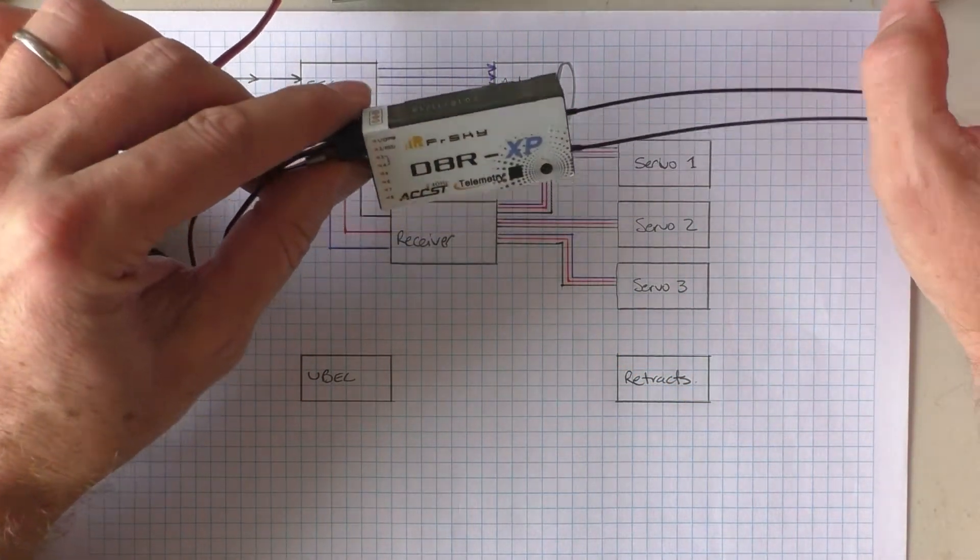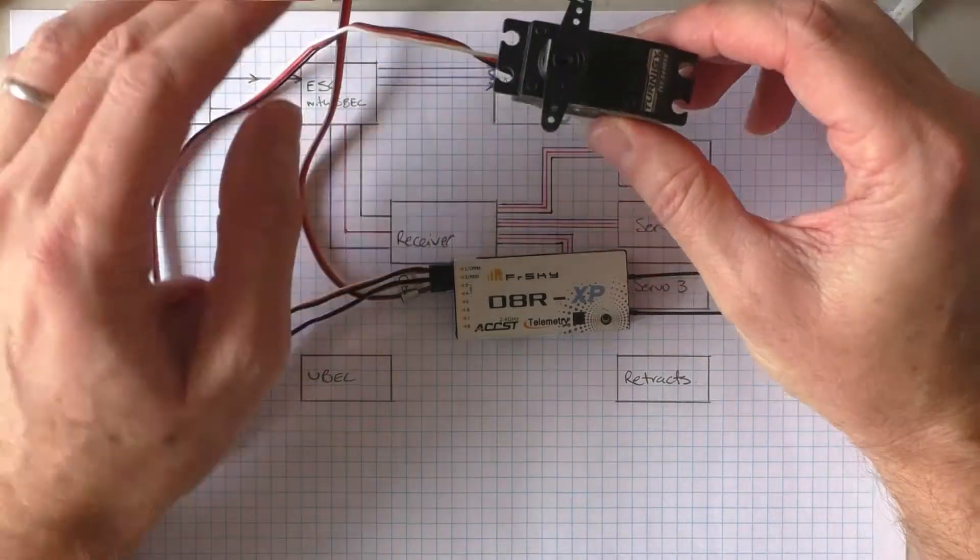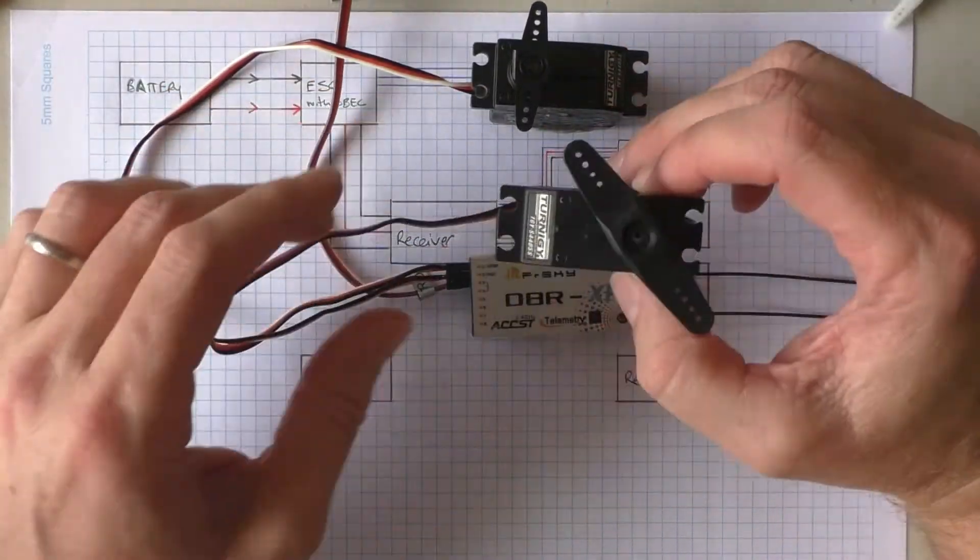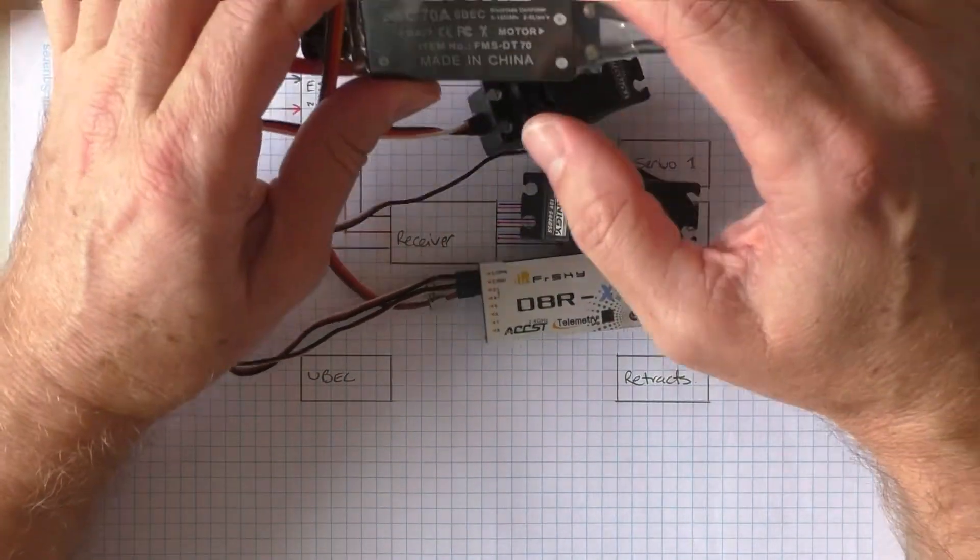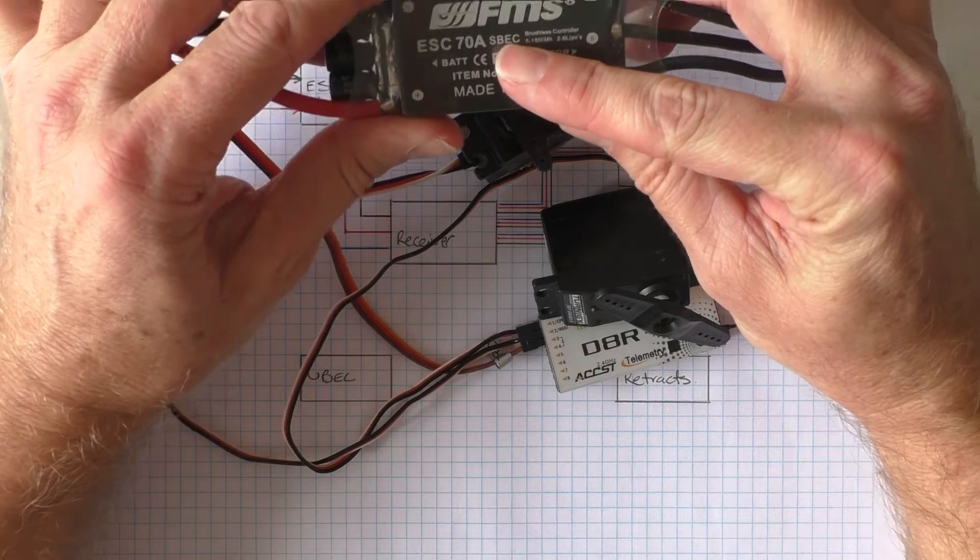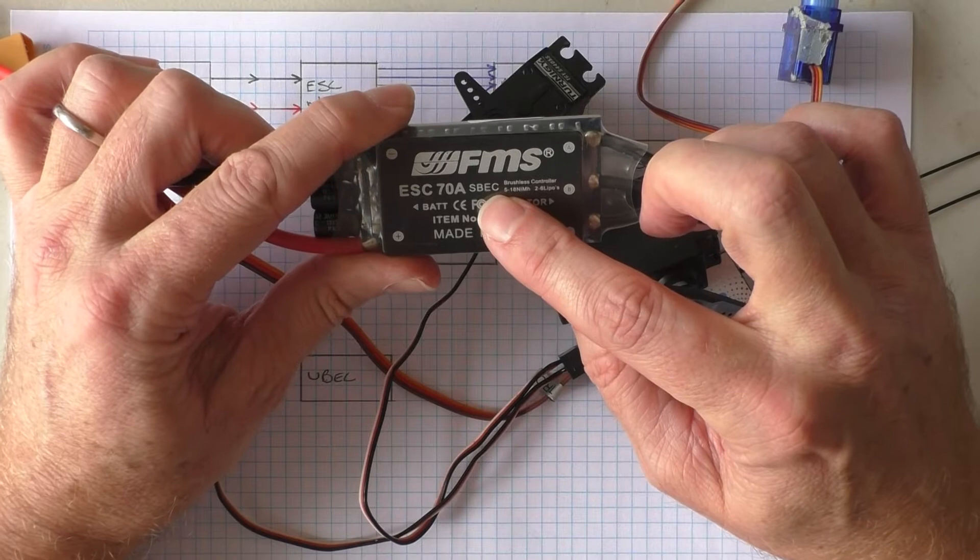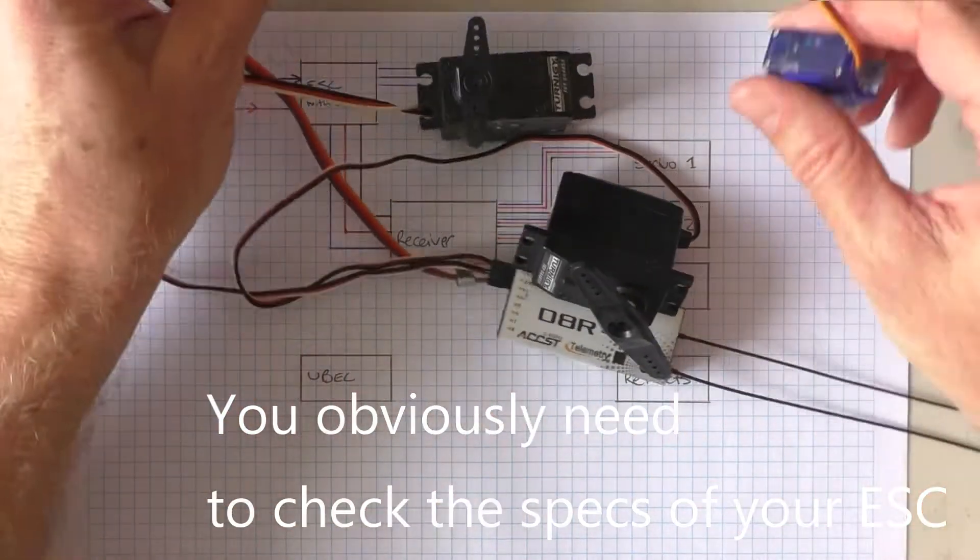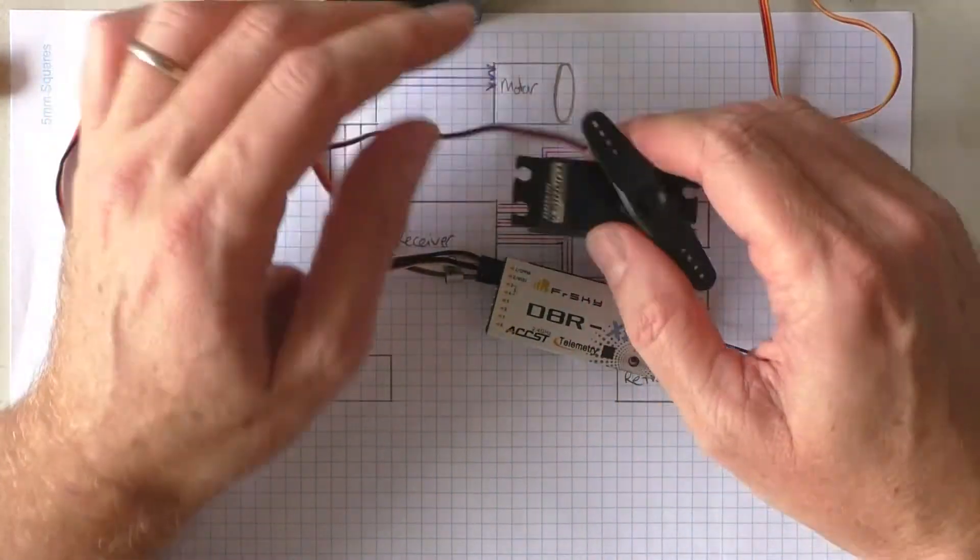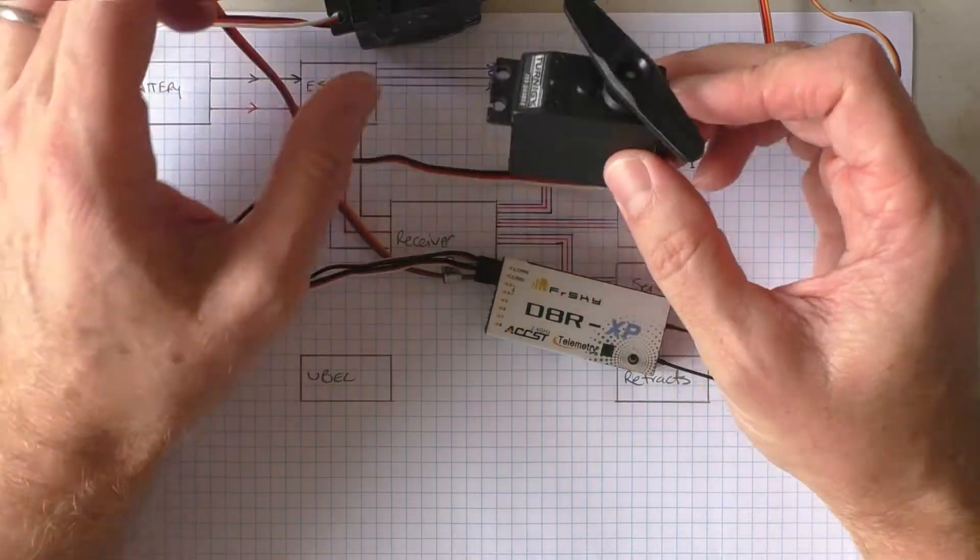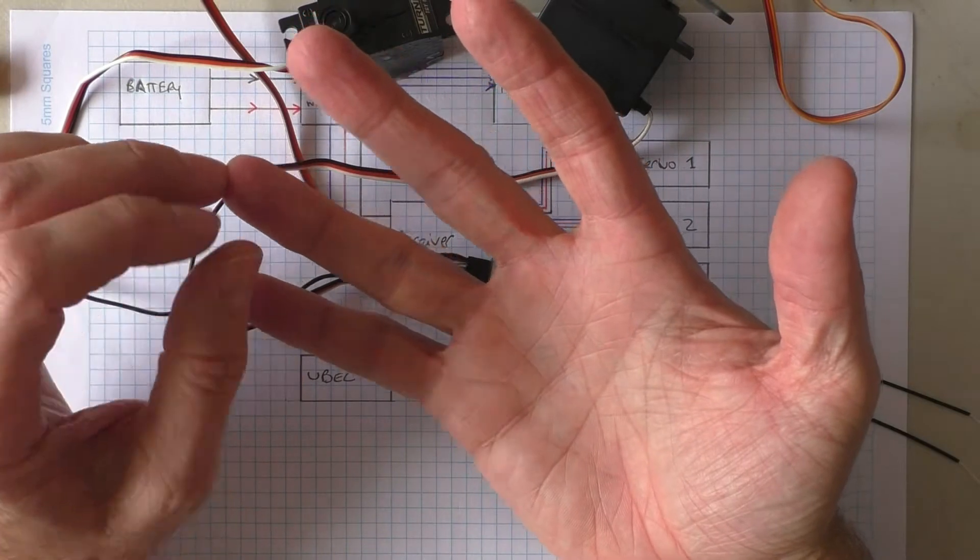Once you start getting into larger planes which use larger servos, you may want to look at installing a UBEC. The reason being is that the power that is put out by this SBEC is about 5 amps. Now, these mini servos only draw about 300, 400 milliamps. But once you start getting into the bigger servos, they can pull about an amp each.